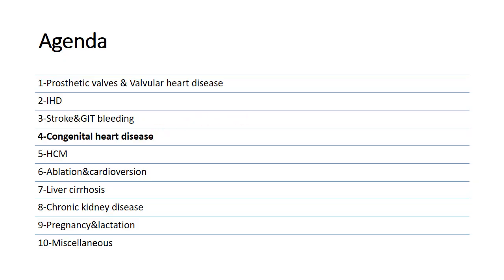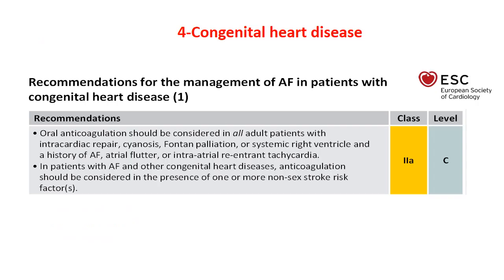For patients with congenital heart disease: oral anticoagulant should be considered in all adult patients with intracardiac repair, cyanosis, Fontan circulation, or systemic RV with a history of atrial fibrillation, atrial flutter, or intra-atrial reentrant tachycardia, regardless of CHA₂DS₂-VASc score. In AF patients with other congenital heart disease, anticoagulation should be considered in the presence of one or more non-sex stroke risk factors.